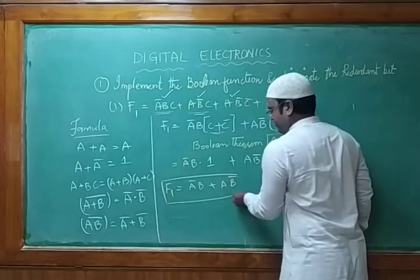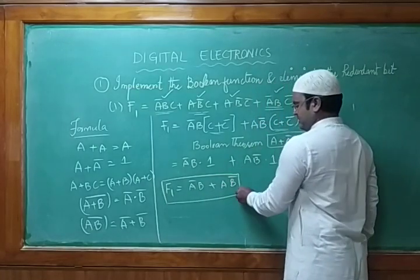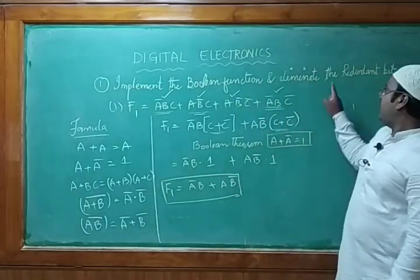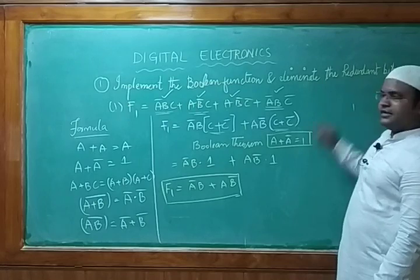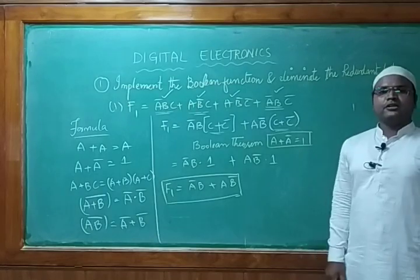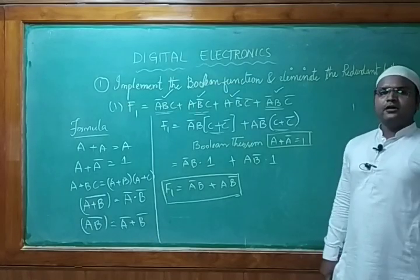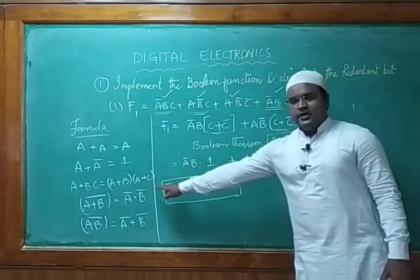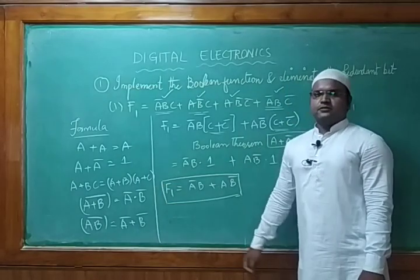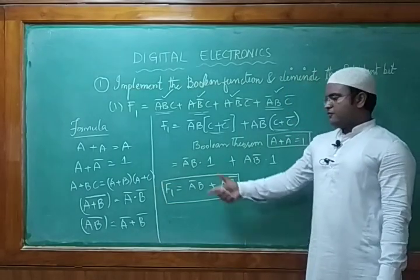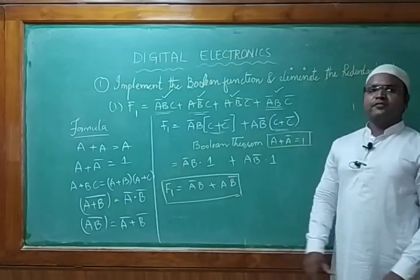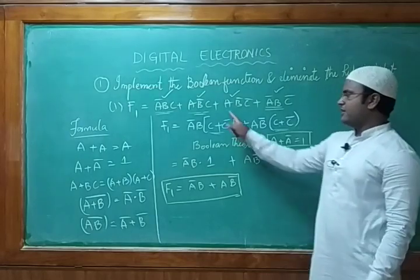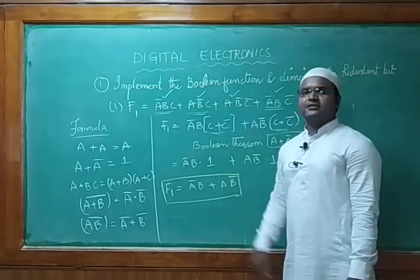So the four original terms of f1 have been modified and simplified to the function ā·b + a·b̄. They ask you to simplify by applying Boolean theorems or De Morgan's theorems, and this is the type of simplification they expect in the exam.